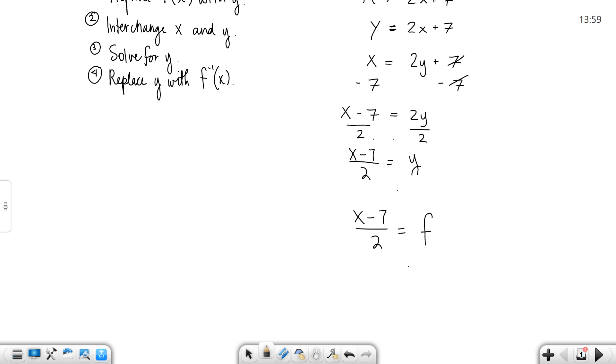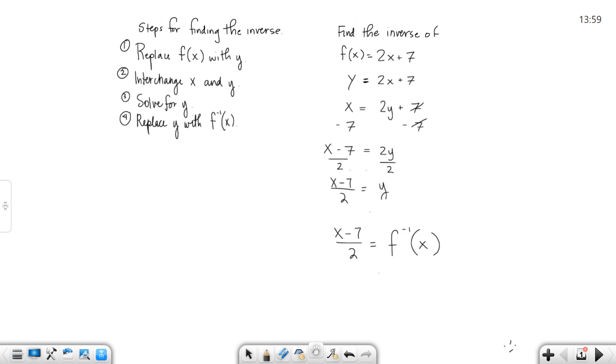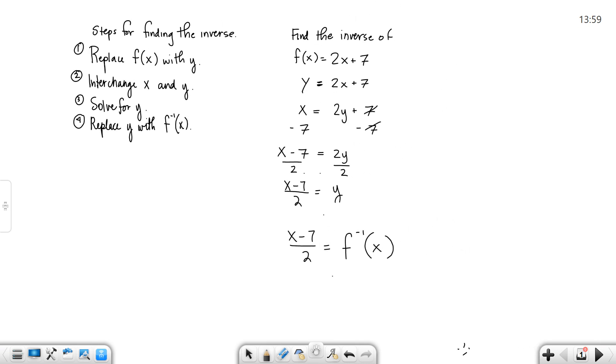Instead of calling it y, we're going to give it its formal name, and its formal name is that f inverse symbol. Now I'm not going to trick you with that. I'm just looking for x minus 7 over 2, but that's technically how they're going to do it in the book.